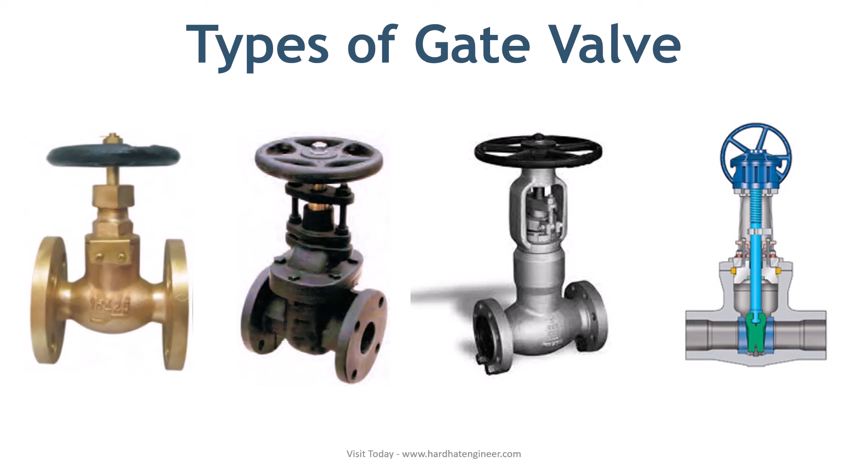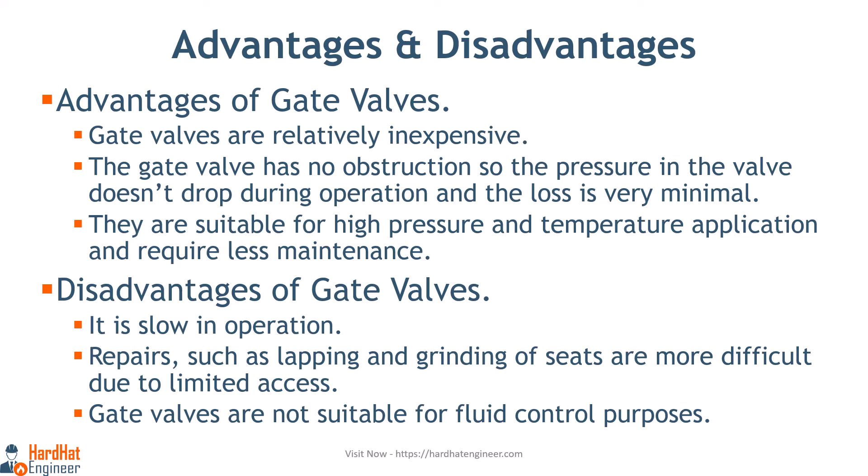There are several different types of gate valves depending on their operating mechanisms, such as rising stem and non-rising stem gate valves, and depending upon their disc type, such as double disc wedge gate and parallel slide gate valves. Advantages of gate valves: they are relatively inexpensive, have no obstruction so pressure doesn't drop during operation, and the loss is very minimal.